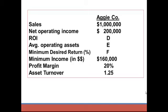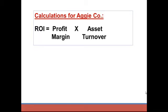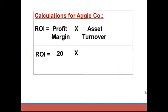There are two ways to calculate ROI. You can take net operating income over average operating assets, but since the assets are unknown, we'll use the other formula. We are given profit margin and asset turnover, so ROI can be calculated as profit margin times asset turnover: 20% times 1.25, which equals 25%. That's letter D.